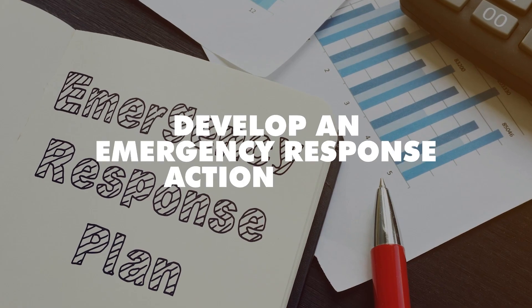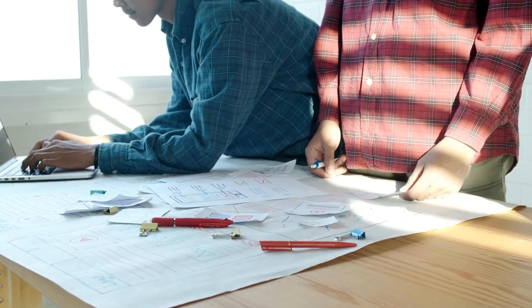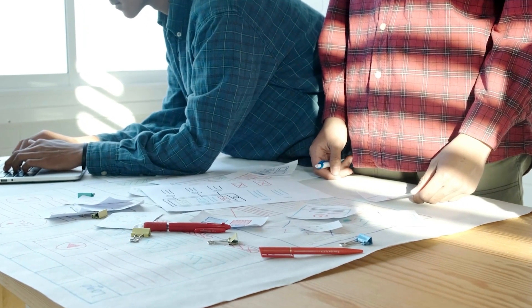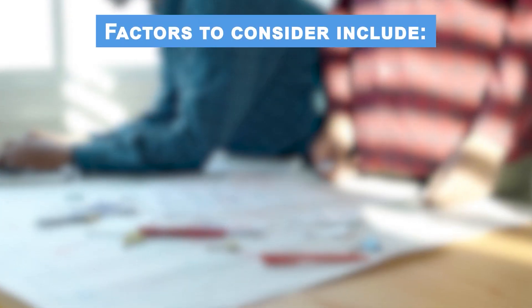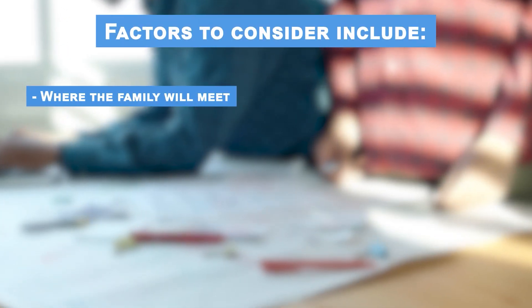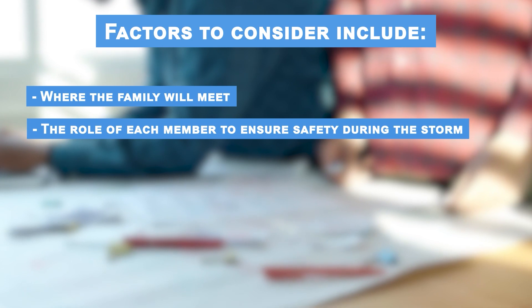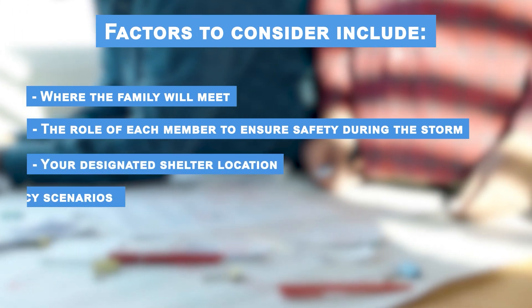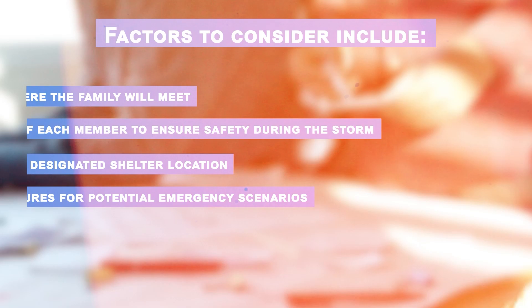Develop an emergency response action plan. This plan should detail how you and your family react to the G5 storm. Factors to consider include where the family will meet, the role of each member to ensure safety during the storm, your designated shelter location, and procedures for potential emergency scenarios.